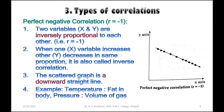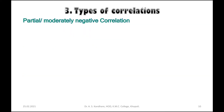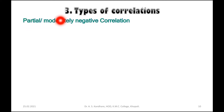Now let us see how these types of correlations differ from each other. We have covered perfect positive correlation, partial or moderately positive correlation, perfect negative correlation, and now we look at partial or moderately negative correlation.